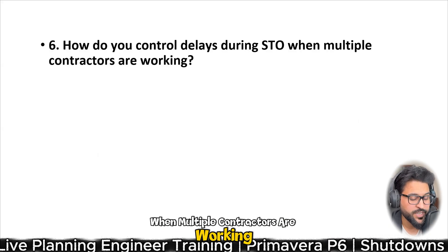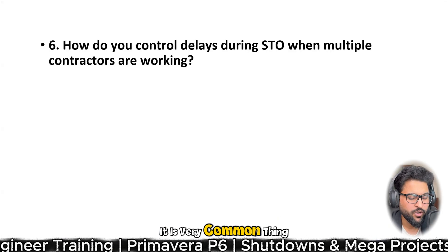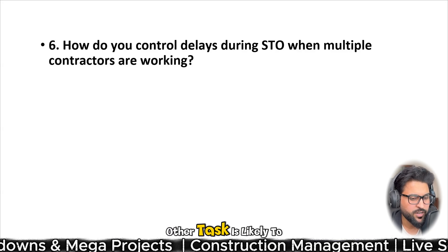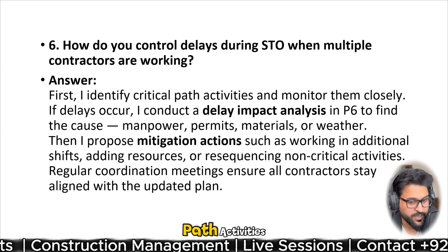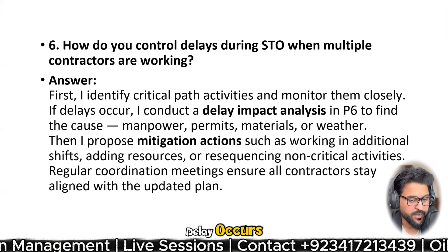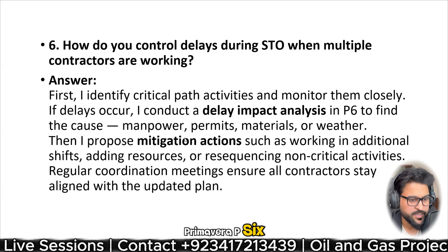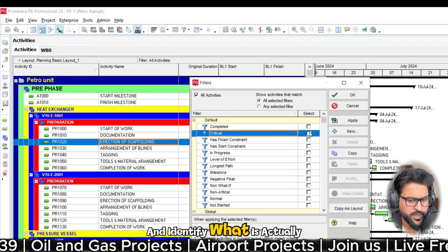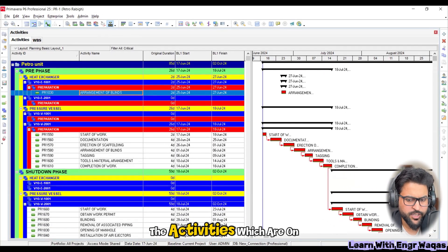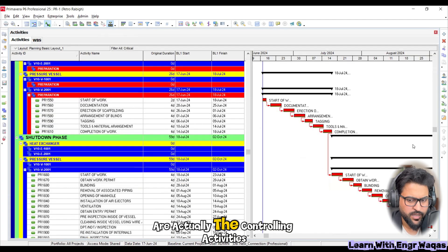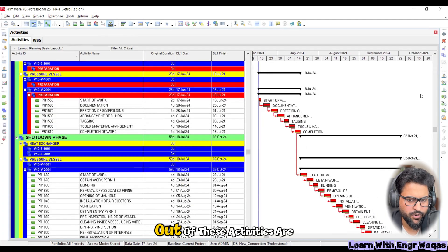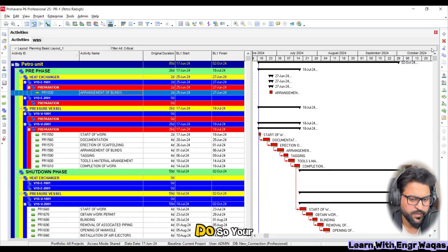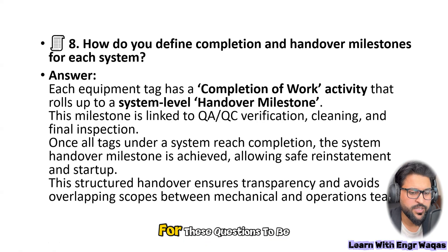How do you control delays during a shutdown when multiple contractors are working? In project scheduling it is common — tasks depend on each other, and if one task delays another is likely to delay too. First, I identify critical path activities and monitor them closely. In Primavera P6 I go into filters and identify which activities are on the critical path, because those are the controlling activities. If any of them delays, the project will definitely delay.